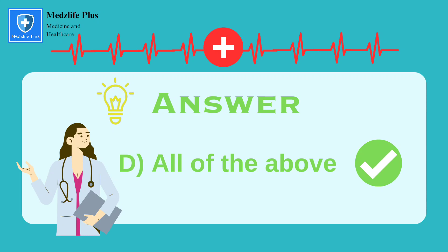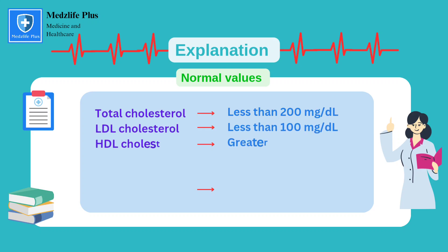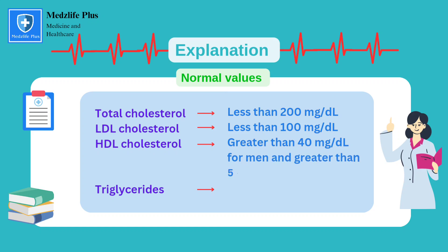All the lipid profile results mentioned are considered abnormal and indicate dyslipidemia, which requires management to reduce the risk of cardiovascular complications. Normal ranges: total cholesterol less than 200 mg/dL, LDL cholesterol less than 100 mg/dL, HDL cholesterol greater than 40 mg/dL for men and greater than 50 mg/dL for women, and triglycerides less than 150 mg/dL.